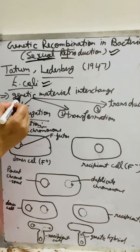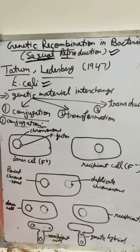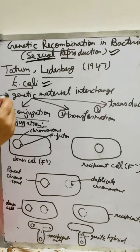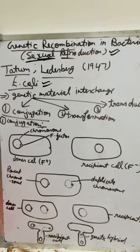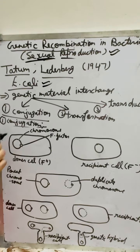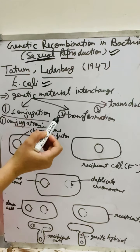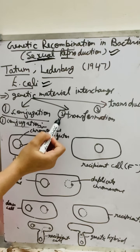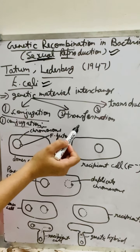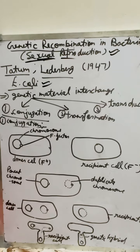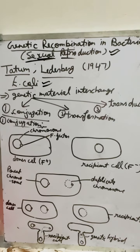This interchange of genetic material is called sexual reproduction. Basically there are three kinds of genetic recombination: number one is conjugation, number two is transformation, and number three is transduction. First I'll describe the conjugation process.